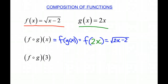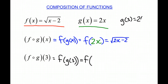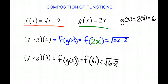Now you can also do it with values. Below we see that we have f of g of 3. We're going to find g of 3 first. What is g of 3? g of 3 is going to equal 2 times 3, which is 6. So therefore we're finding f of 6, which is the square root of 6 minus 2, which is going to equal the square root of 4, which is 2. So therefore f of g of 3 equals 2.